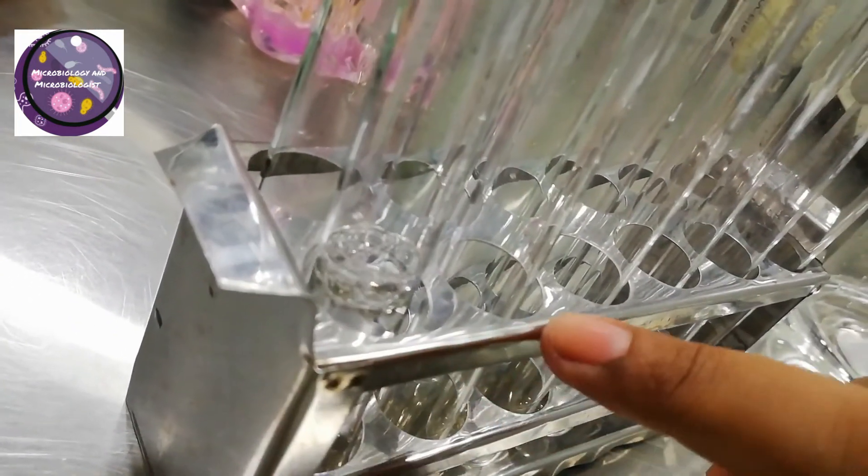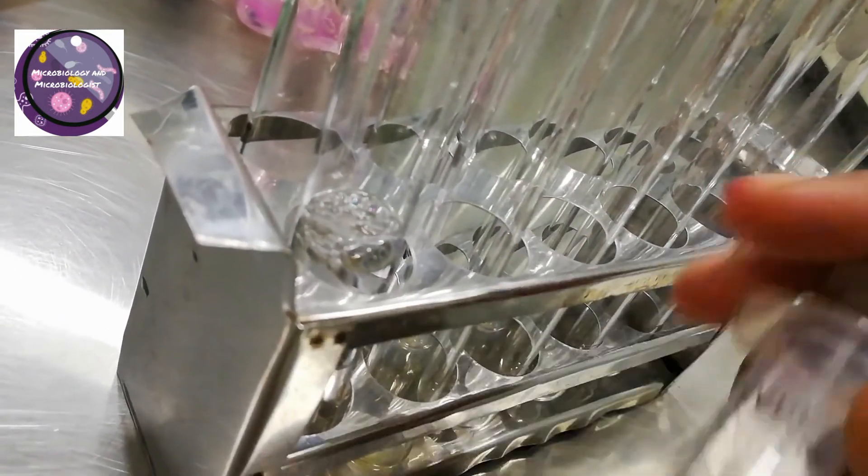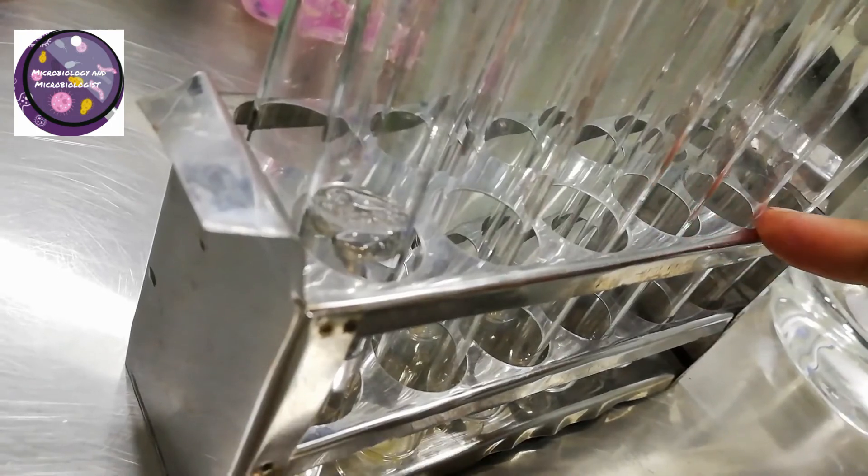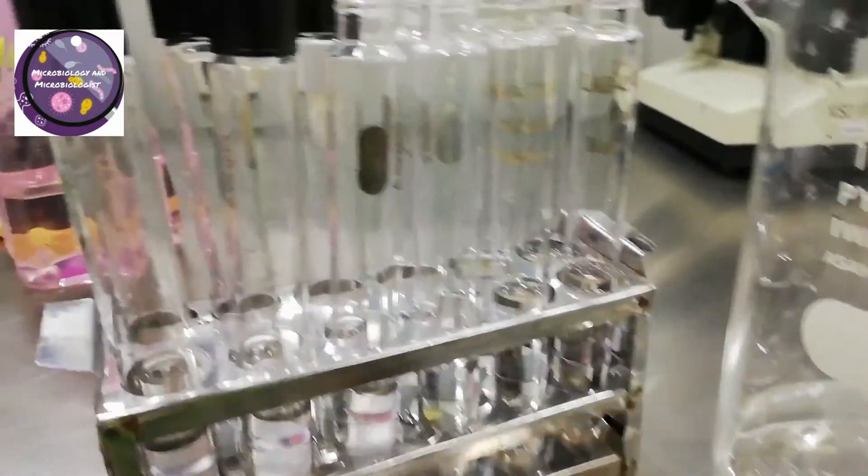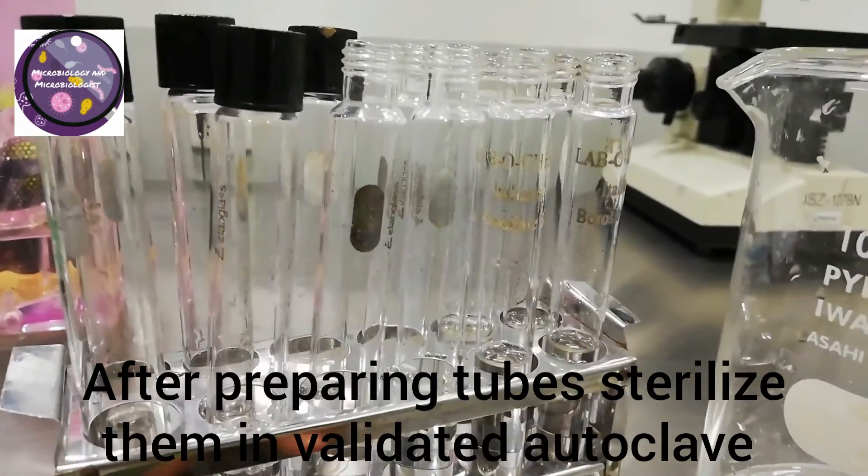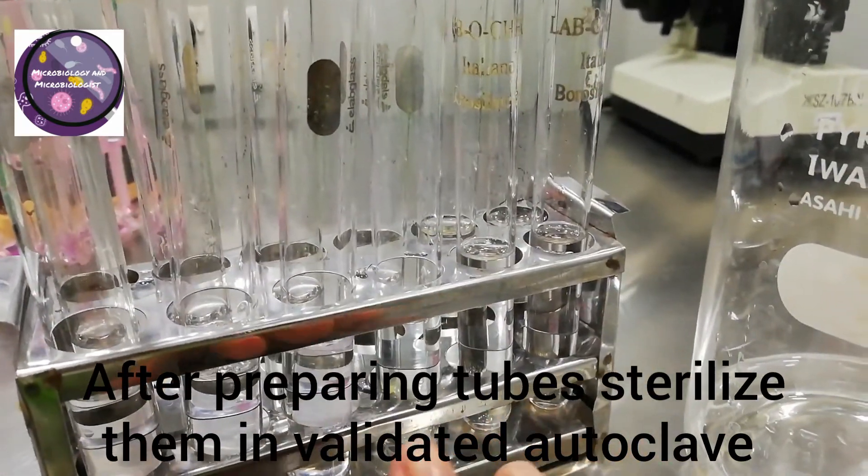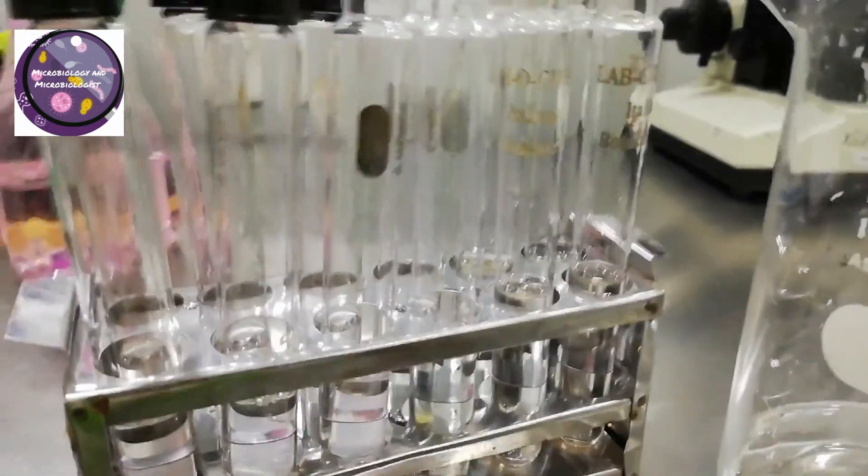For serial dilution, we are going to add 9ml in all these 15ml culture tubes. After filling the tubes, I am capping them.